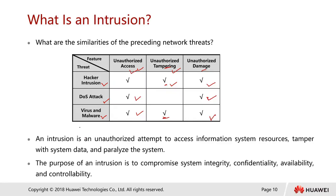An intrusion is an unauthorized attempt to access information and system resources, tamper with system data, and paralyze the system. The purpose of an intrusion is to compromise the system's integrity, confidentiality, availability, and controllability. Integrity means data is not tampered with in transit; confidentiality protects the secrecy of information; availability defines who can access information and when; and controllability defines who has authority to perform read or write operations.